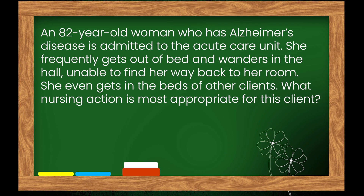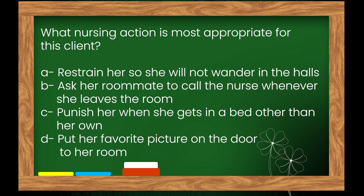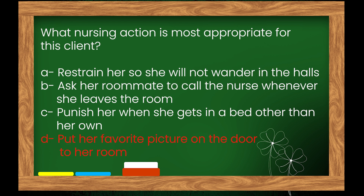Question 6: An 82-year-old woman who has Alzheimer's disease is admitted to the acute care unit. She frequently gets out of bed and wanders in the hall, unable to find her way back to her room, and gets in the beds of other clients. What nursing action is most appropriate? Options: A. Restrain her so she will not wander, B. Ask her roommate to call the nurse whenever she leaves, C. Punish her when she gets in a bed other than her own, D. Put her favorite picture on the door to her room. The right answer is option D: put her favorite picture on the door to her room.